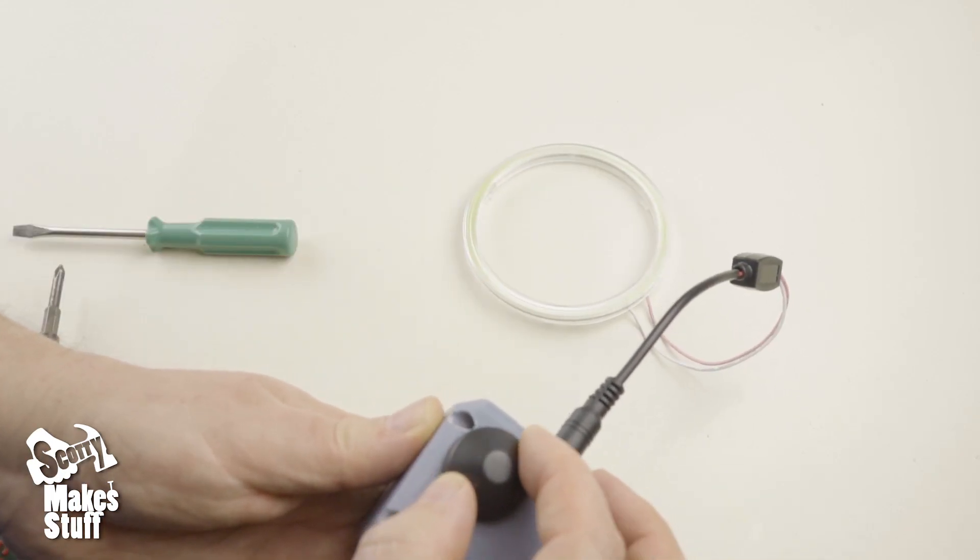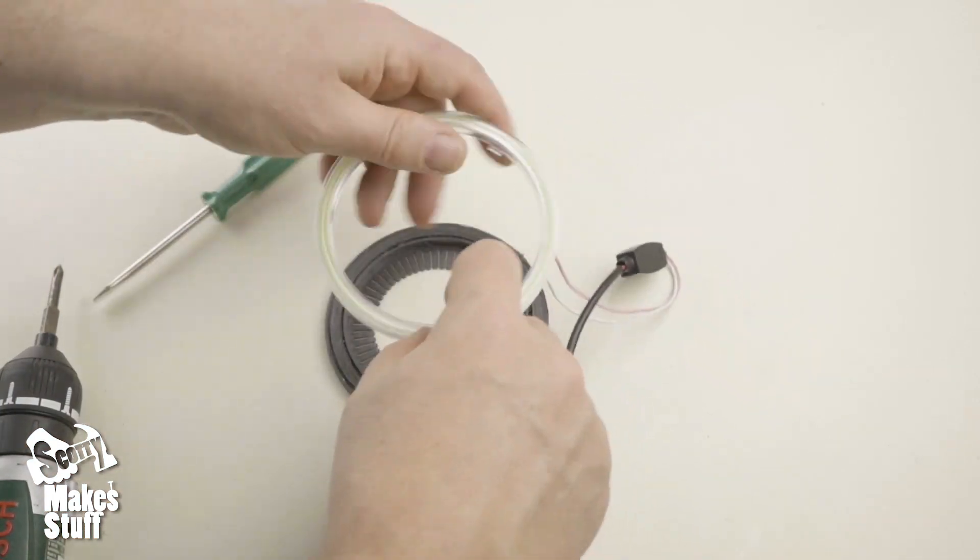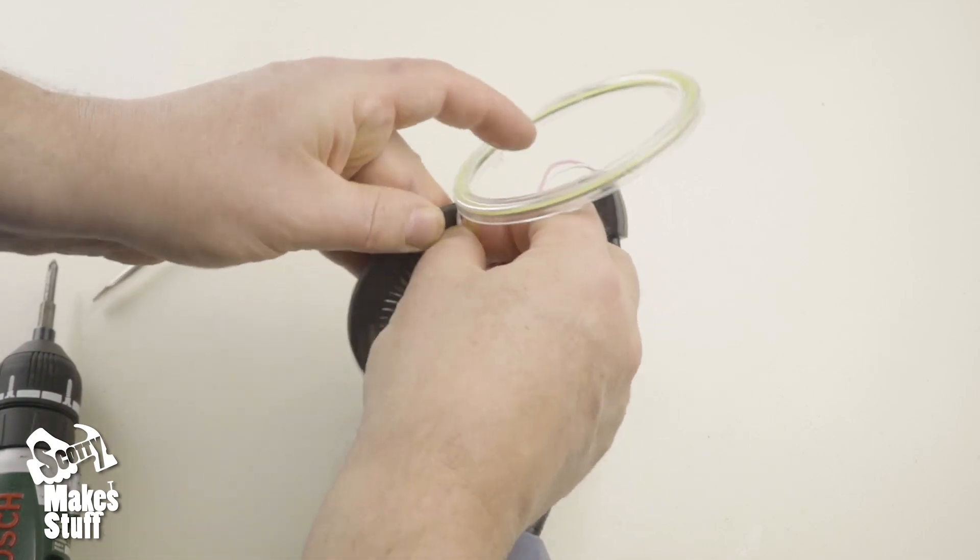Finally we need to mount the LED ring light into the flexible mount. It's got three clips on the ring light that slot in to the flexible mount.